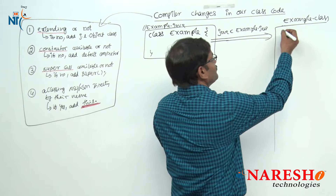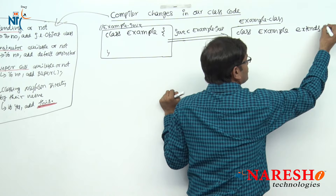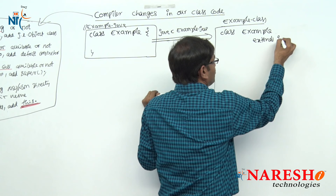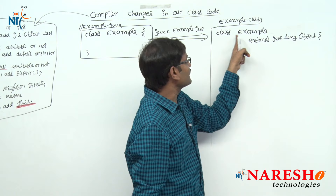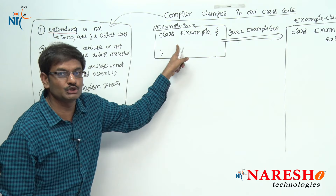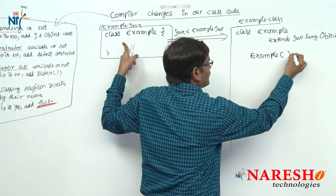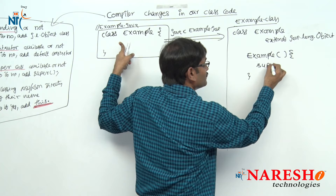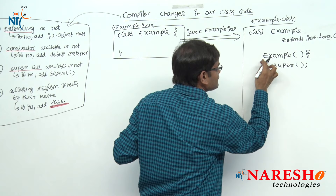Not extending — so compiler software will make it: class Example extends java.lang.Object. That is a predefined class given by Sun Microsystems. Then next, what is the second check? Constructor available or not? Did we create any constructor? No. So compiler software is adding one constructor: Example() — no parameter constructor — along with super(); — super parenthesis semicolon.